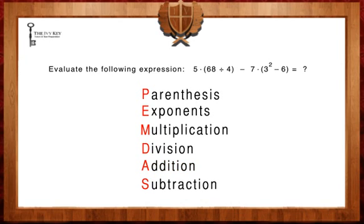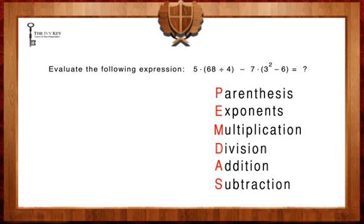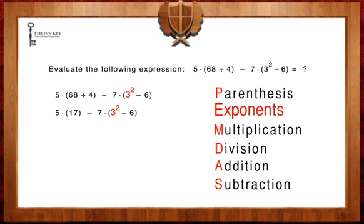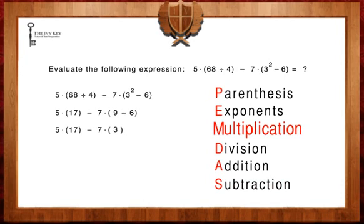Hence, we're going to solve the equations inside of our parentheses first. 68 divided by 4 equals 17, and 3 squared equals 9. 9 minus 6 equals 3. Next, we want to multiply our remaining terms of 5 and 17.